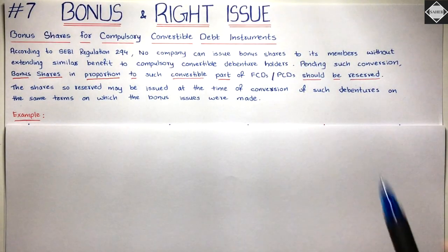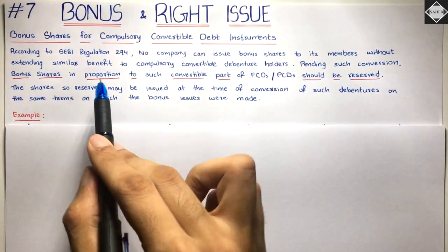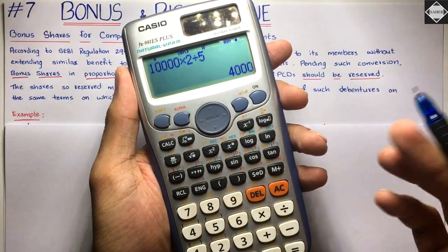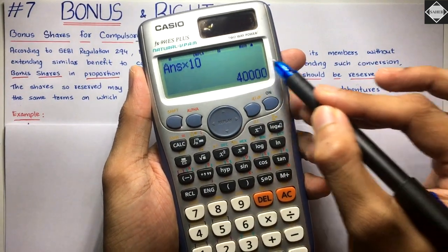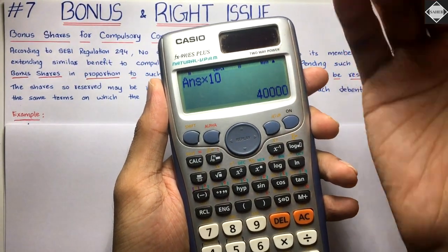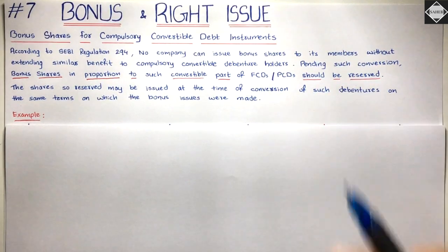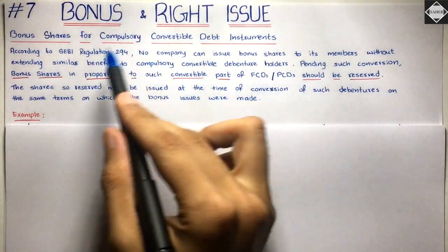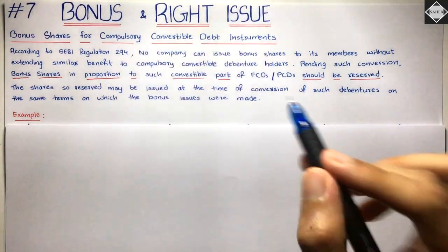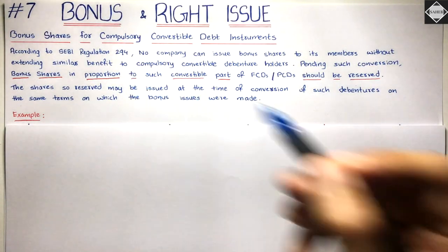The calculation is easy. Normally they are going to get 10,000 shares on conversion. So: 10,000 shares × bonus ratio (say 2 for every 5 shares) = 10,000 × 2/5 = 4,000 bonus shares. But the bonus issue is happening today. So pending such conversion, 4,000 shares × face value of Rs.10 = Rs.40,000 should be reserved in a special account called 'Bonus to FCDs Account.' At the time of conversion, this reserve is used to give shares to FCD holders.